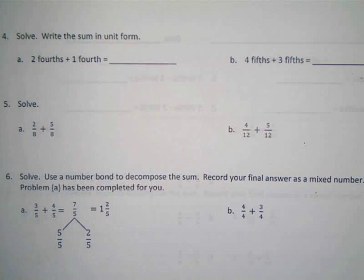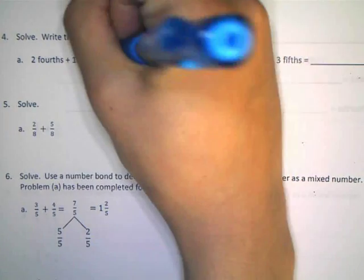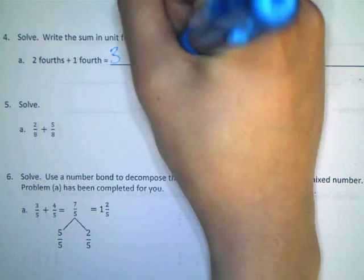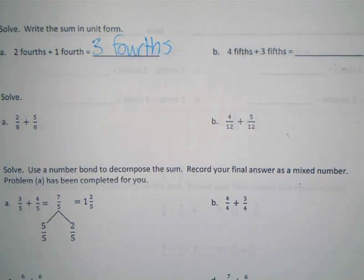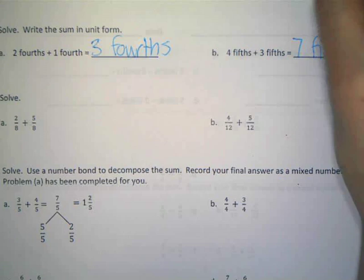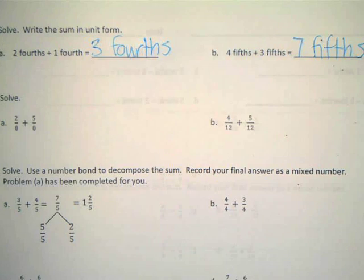All right. So write the sum in unit form. What do they mean by unit form, do you think? Devin? Like a fraction, not six. Actually, it's the opposite way. They want us to use the words and not the fraction. So good guess. We haven't talked about that. So, all right. Two-fourths plus one-fourth is what? Three-fourths. Three-fourths. Just like it did on the other side, right?